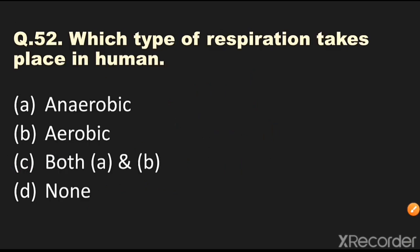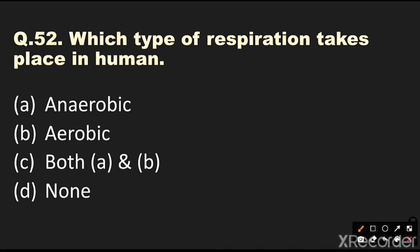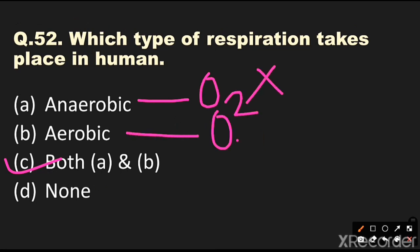Question number 52: Which type of respiration takes place in humans? Options are anaerobic, aerobic, both anaerobic and aerobic, or none. The answer is both anaerobic and aerobic. Anaerobic respiration takes place in the absence of oxygen, and aerobic respiration takes place in the presence of oxygen.